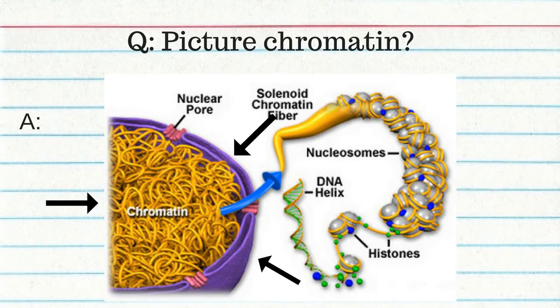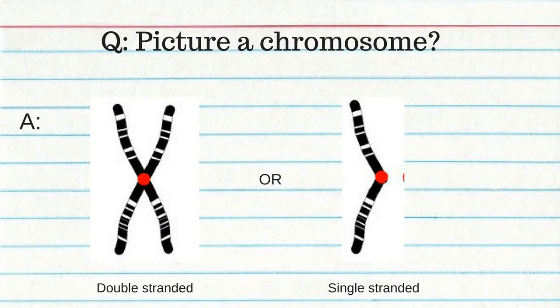Chromatin refers to DNA strands that are long, spindly, and intertwined; individual chromosomes are not visible and they are found in non-dividing cells. Chromosomes are DNA strands that have shortened or thickened by coiling tightly around a protein; they are visible in the cell and found in actively dividing cells. A double-stranded chromosome has two identical strands of DNA held together at a centromere, found in the early stages of mitosis. A chromatid is an individual strand of DNA in a double-stranded chromosome.